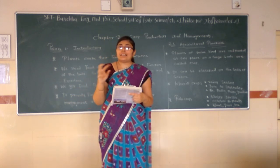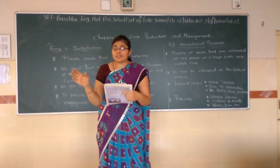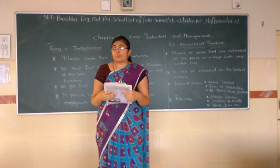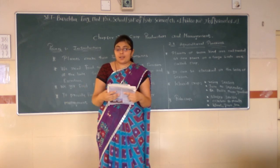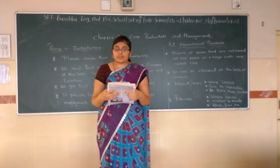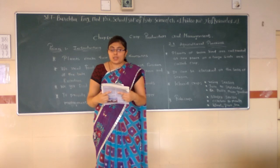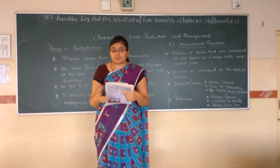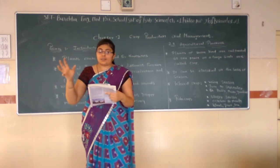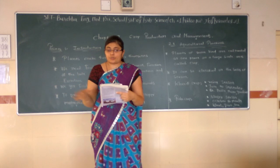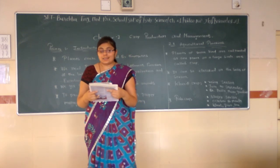There are two main types of crops in India. The first is Kharif crops — crops sown in the rainy season, generally from June to September. Examples of Kharif crops include paddy, maize, soybean, groundnut, and cotton. The second type is Rabi crops — crops grown in the winter season, from October to March. Examples of Rabi crops include wheat, gram, mustard, and linseed.